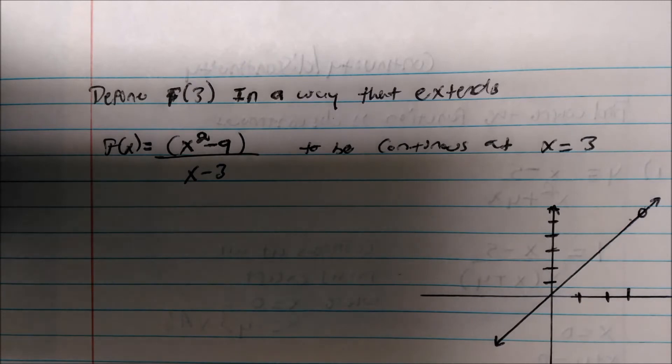Alright, so they asked us to define f(3) in a way that extends the function x squared minus 9 divided by x minus 3 to be continuous at x equals 3.